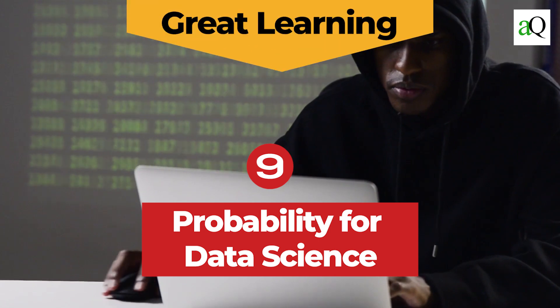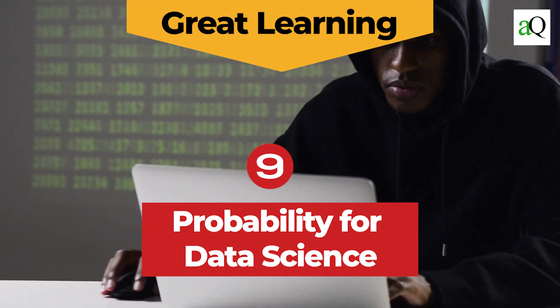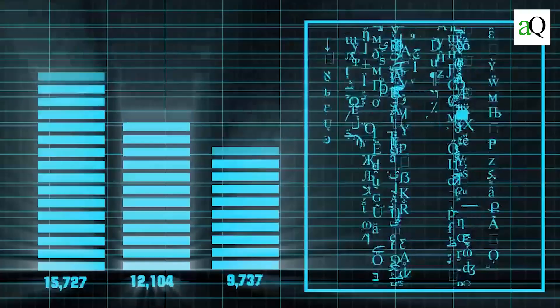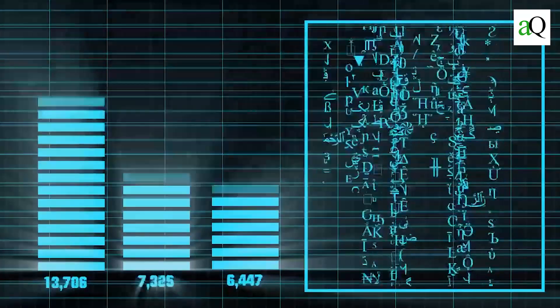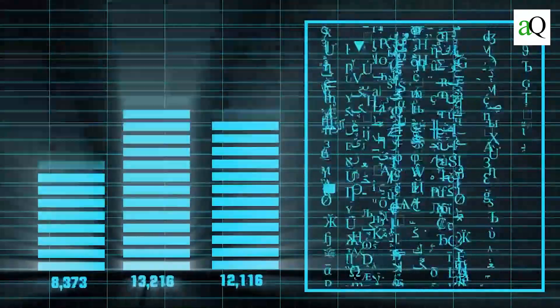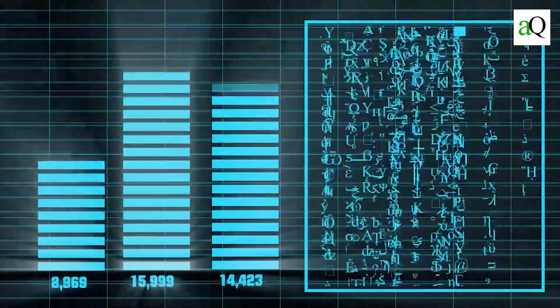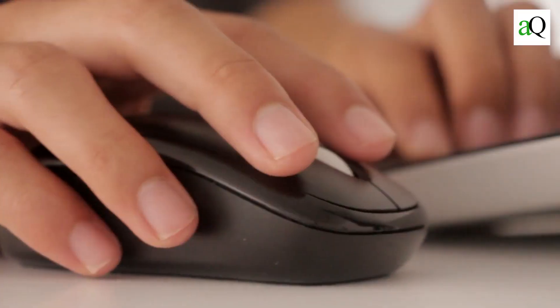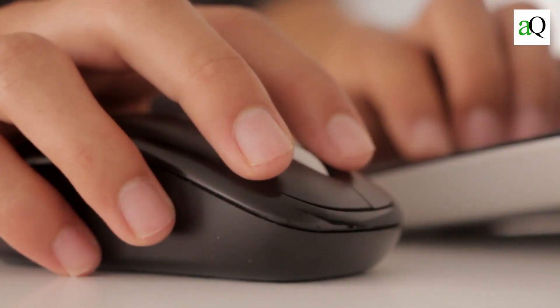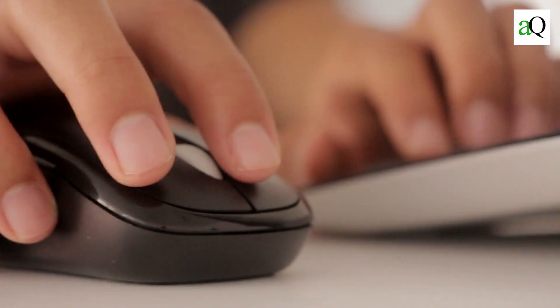Probability for Data Science from Great Learning. To enter the field of data science, it is necessary to understand the concepts of probability as they form the backbone of many fundamental concepts. The Probability for Data Science course will teach you about probability and Bayes' theorem, as well as introduce you to the concept of marginal probability. This course is for those interested in learning more about the data science field of computer science.